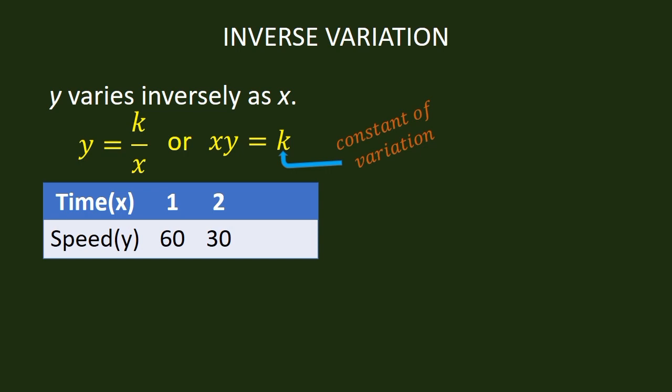For 3 hours time, the speed needs to be 20 kilometers per hour. And for 4 hours, the speed is 15 kilometers per hour. It can be seen in the table, where time is X and speed is Y.